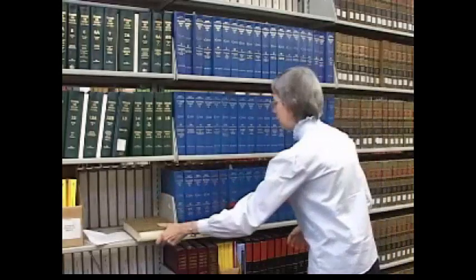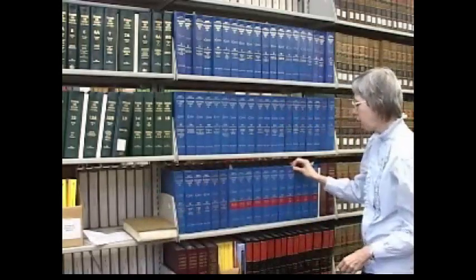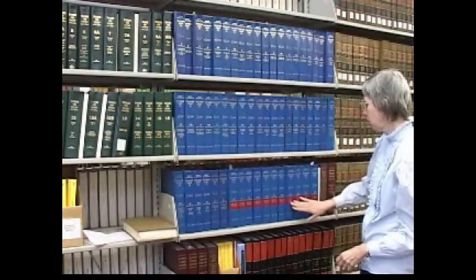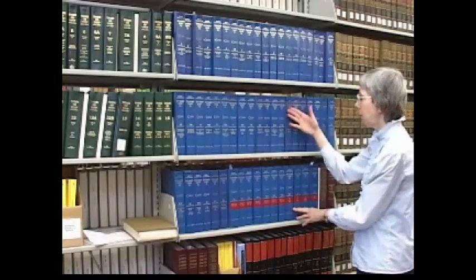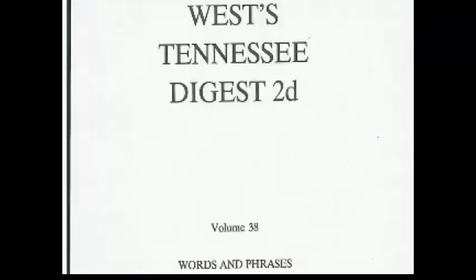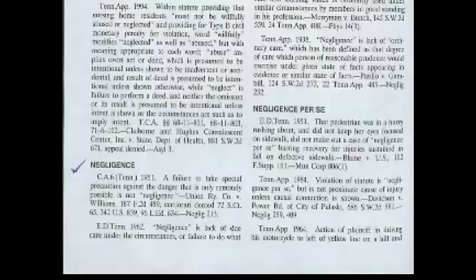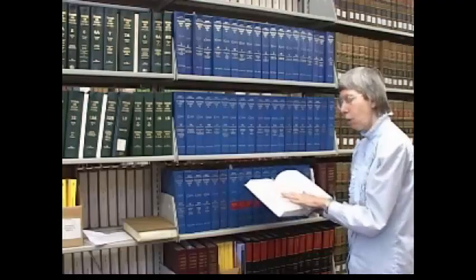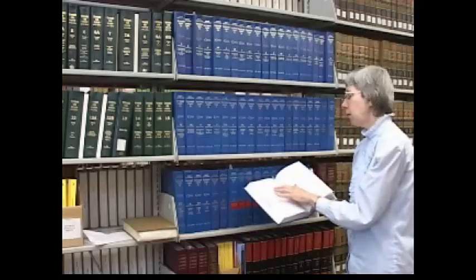Other features of the Tennessee Digest: you'll have your tables of cases, where you can find where those cases are represented in the set. We also have words and phrases, which is quite interesting. For example, we've used the term 'negligence' — you can see where that has been defined through the courts of Tennessee. Go under negligence and it will have the most important court cases that define the term, along with citations and key numbers.